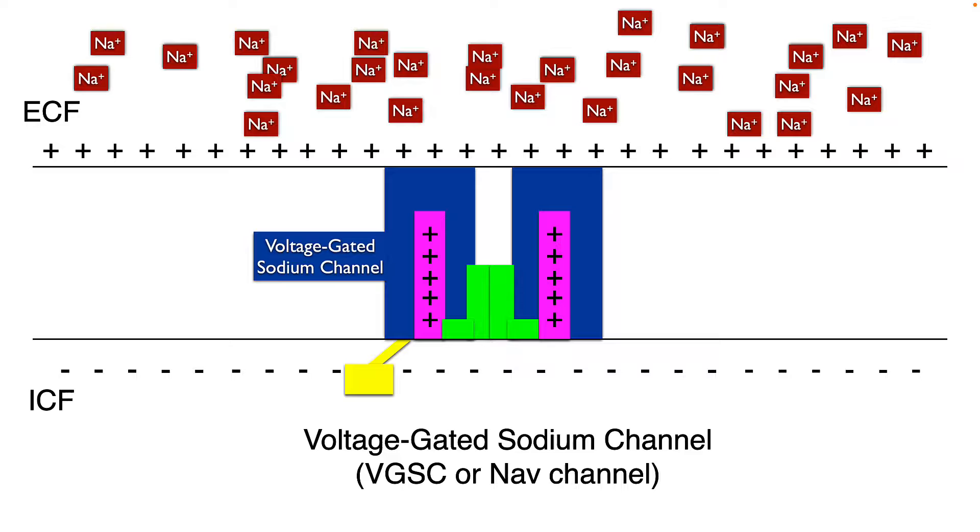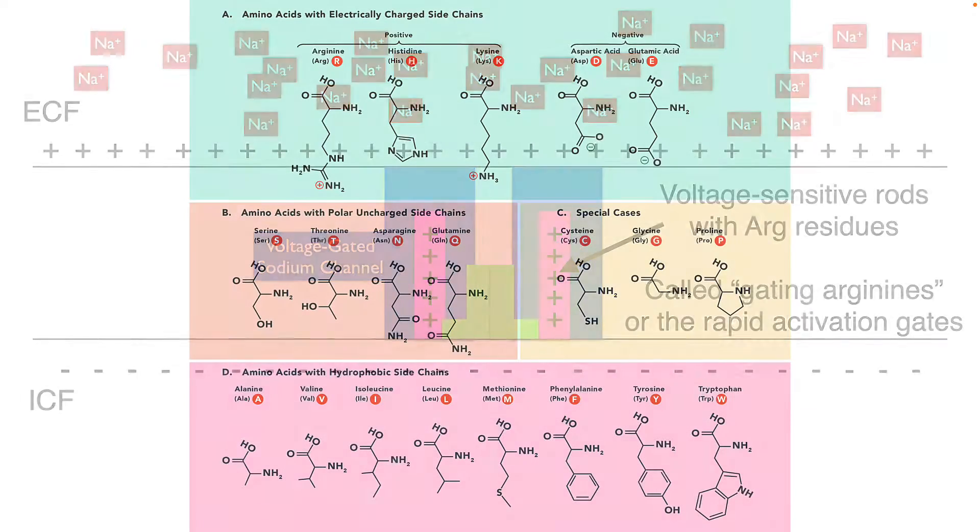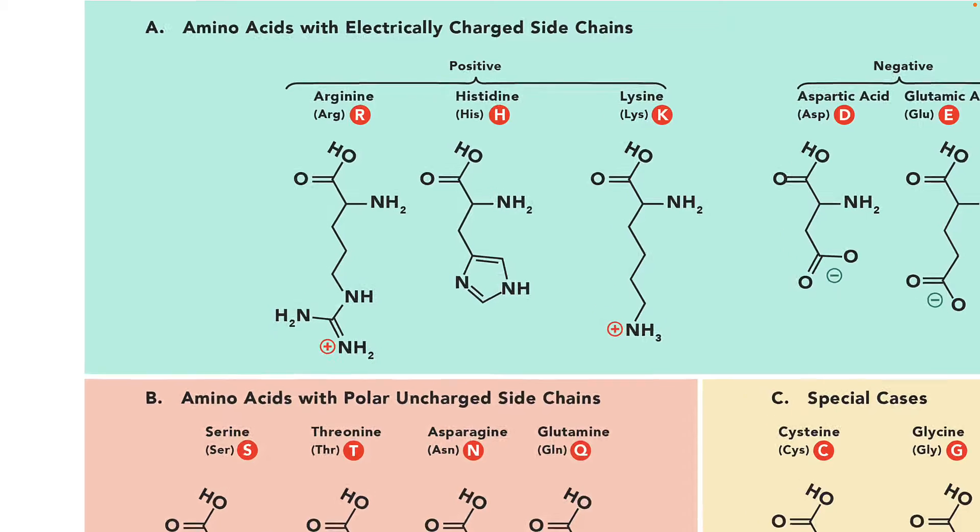So let's look at the voltage-gated sodium channel first. It has a couple of really interesting features, including these voltage-sensitive rods with arginine residues. There's also some lysine. These are called gating arginines, or rapid activation gates. And to understand how they work, yeah, you guessed it. We're going to look at the chemistry.